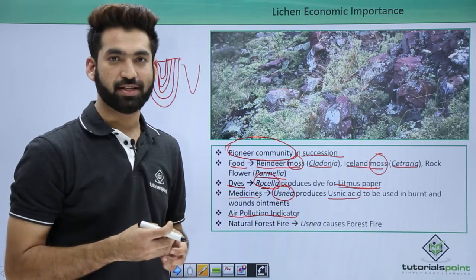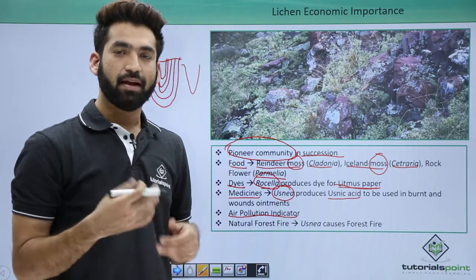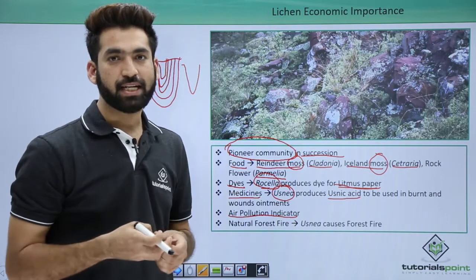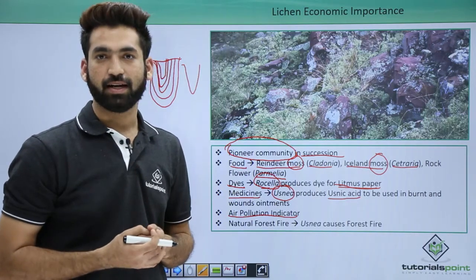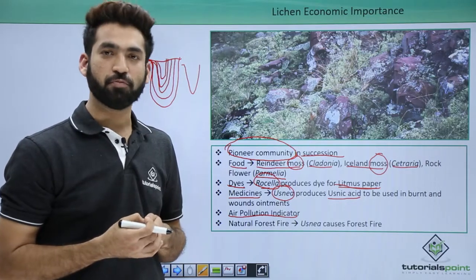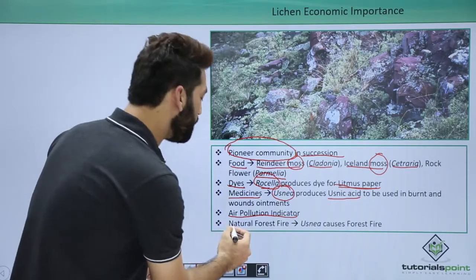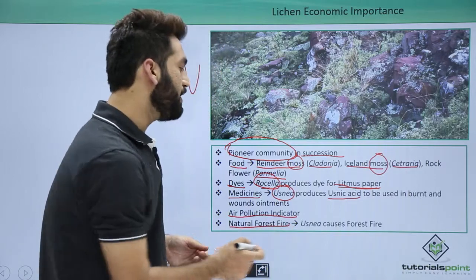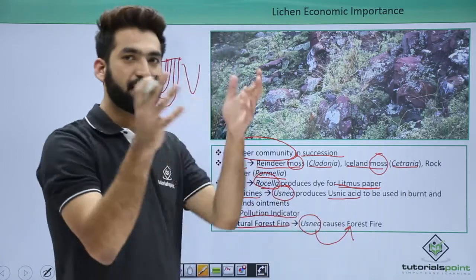Lichens are good pollution indicators, especially for air pollution, and specifically for SO2 pollution. In SO2-polluted areas, lichen will not grow, making them reliable indicators of SO2 or air pollution.